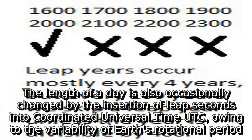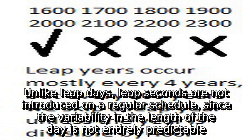The length of a day is also occasionally changed by the insertion of leap seconds into Coordinated Universal Time (UTC), owing to the variability of Earth's rotational period. Unlike leap days, leap seconds are not introduced on a regular schedule, since the variability in the length of the day is not entirely predictable.